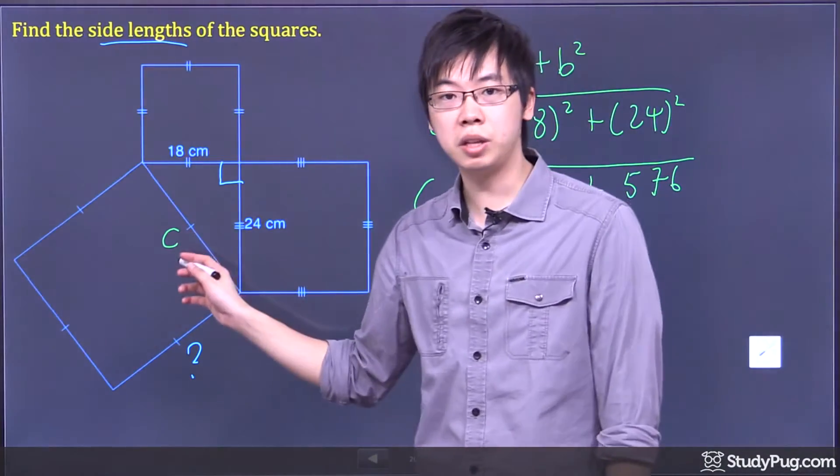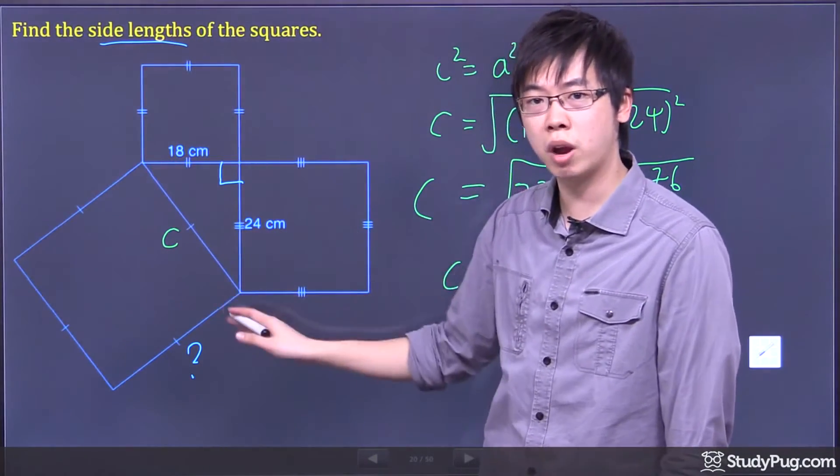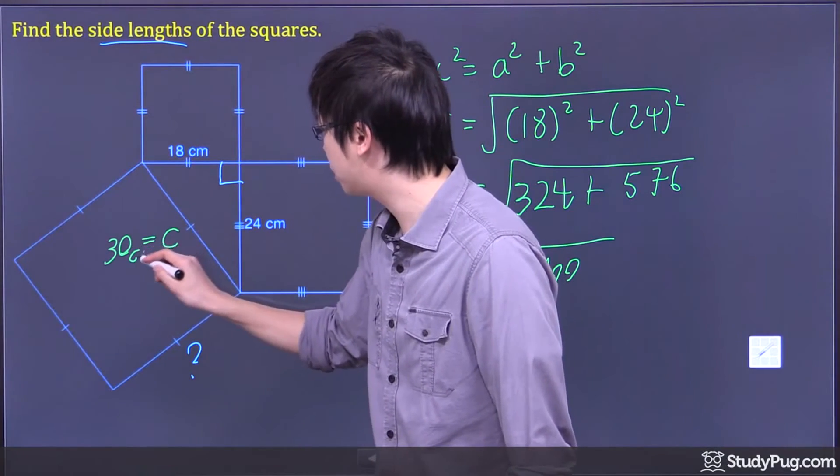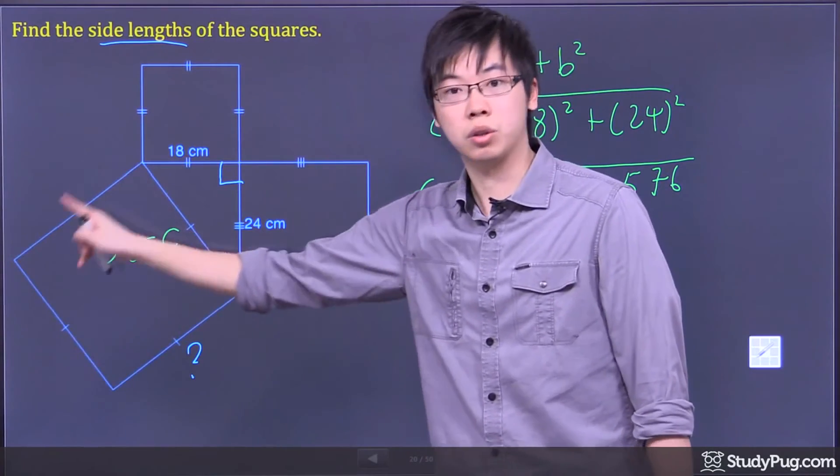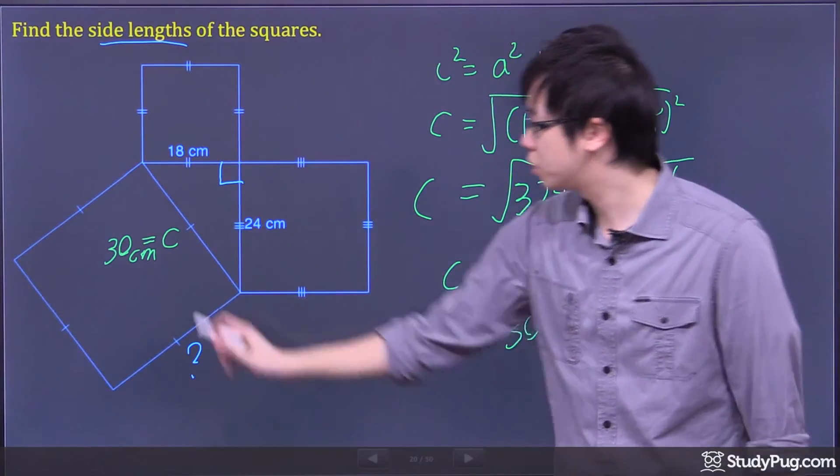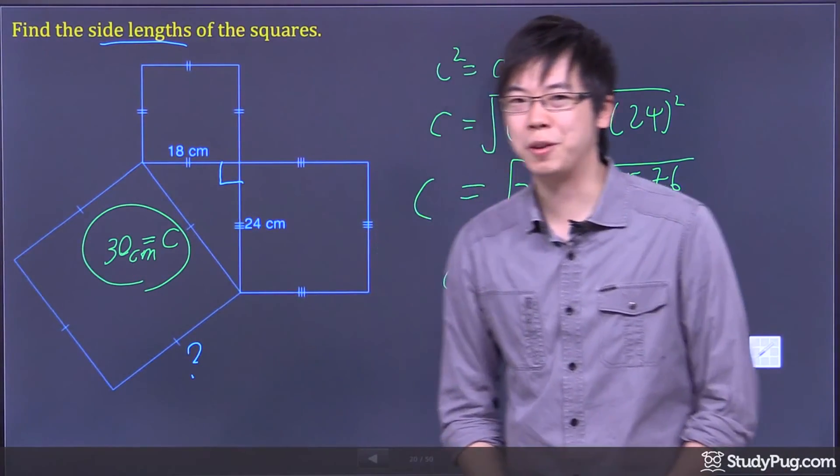So that means the c over here, this hypotenuse of this triangle, is going to be 30 centimeters. And that is the side of this square over here. And that's what they're looking for. So your answer is just 30 centimeters. Thanks for watching.